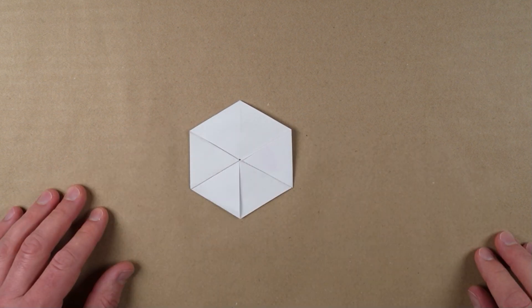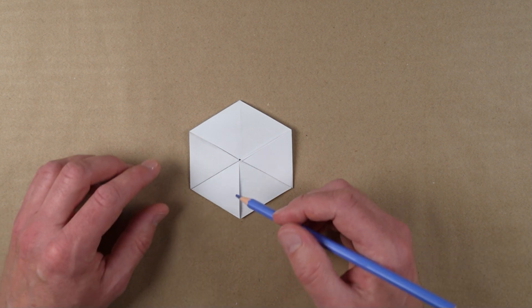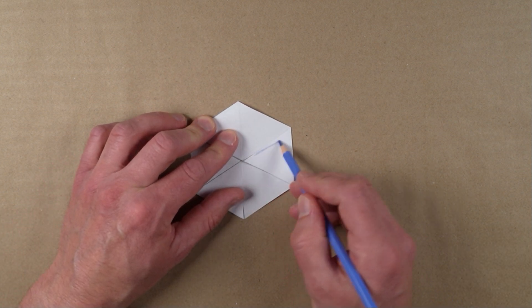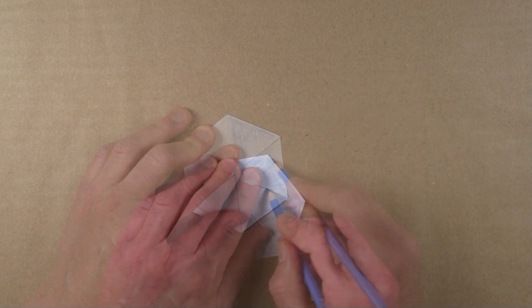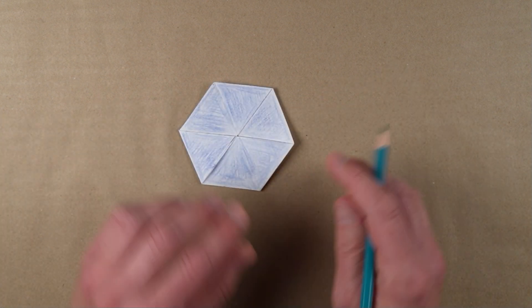You're now ready to decorate the faces of your trihexaflexagon. Start by decorating the two visible faces any way you like. For this one, I'll just color the faces purple and green.